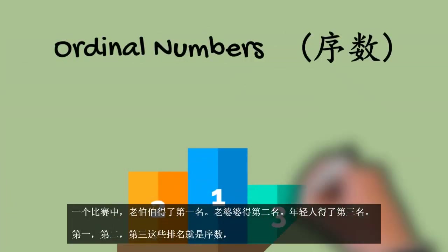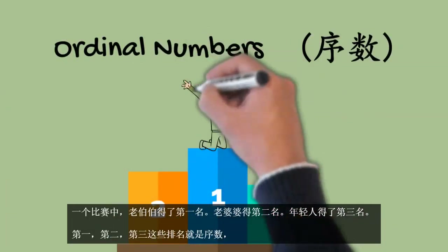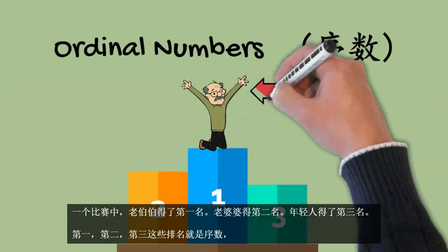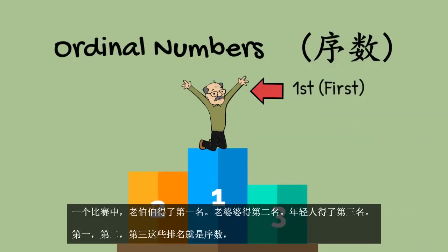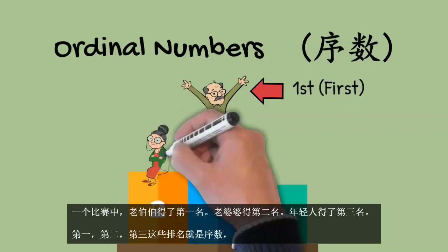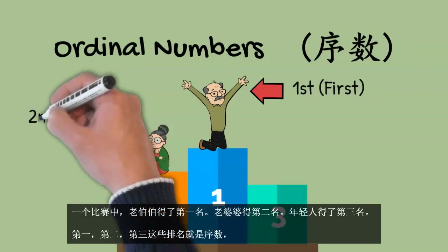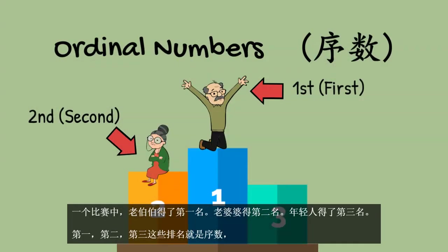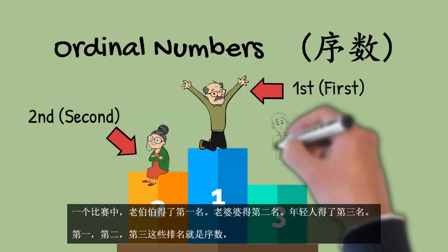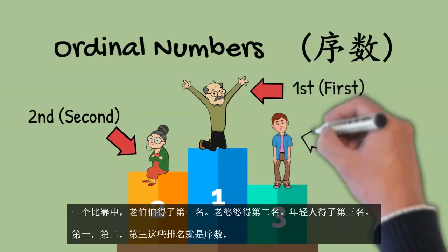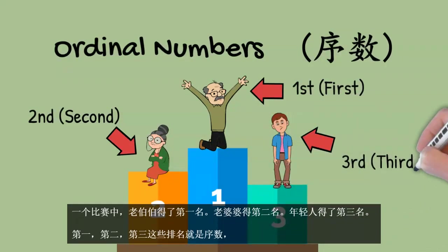For example, the old man got the first prize in a competition. The old lady surprisingly managed to get the second prize. The young man, sadly, got the third prize.